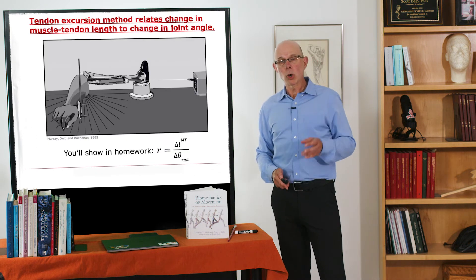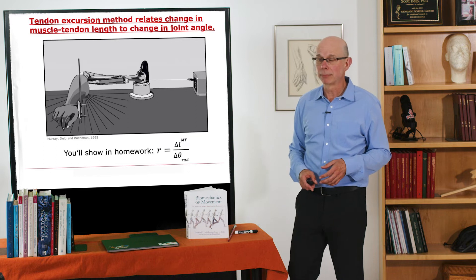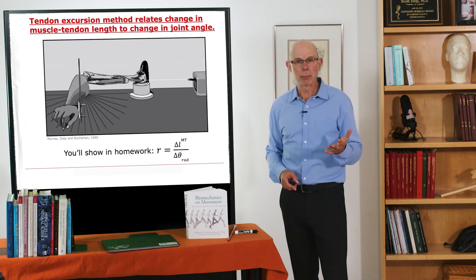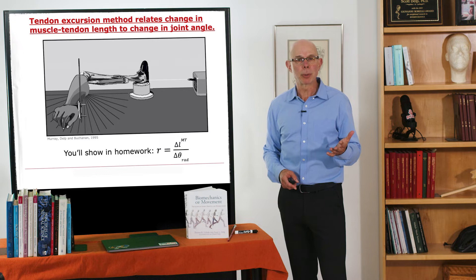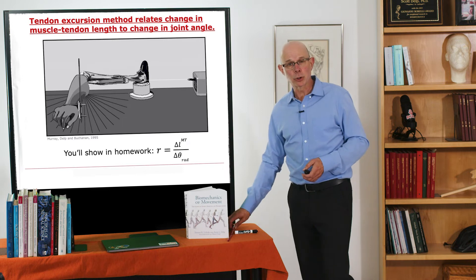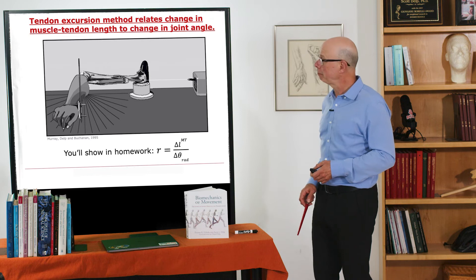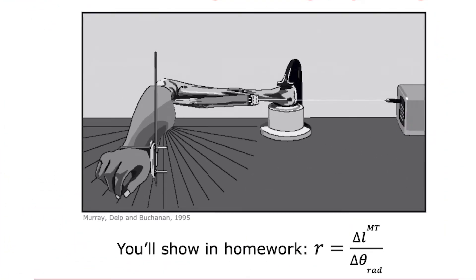You can also estimate the moment arms of muscles with a technique called the tendon excursion method. Kainan Ahn published a beautiful paper that describes how to use the principle of virtual work to characterize moment arms of muscles. Here's a picture of a fairly gruesome setup where we had a cadaver limb. So here's the arm. Here's the top of the humerus. So here this is where we're approximating the center of the shoulder. We've got a C clamp that's clamping that down.